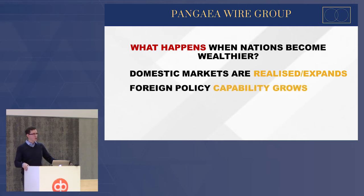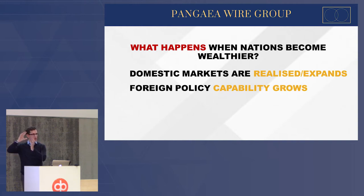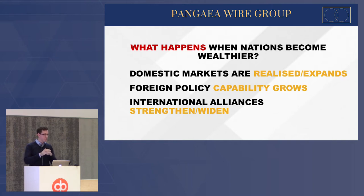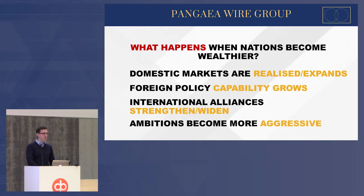Their foreign policy capabilities also grow substantially. They develop the financial ability to maintain their own economies, and the next phase is to look outwardly — which is why we see flashpoints in different parts of the world as nations grow financially. International alliances are also strengthened, causing even more complexities in the international order. It's no longer a simple case of the Soviet Union and the West; we have smaller players regionally causing havoc. Companies can no longer have a regional response — they need country-by-country specific responses.